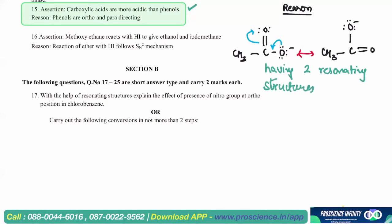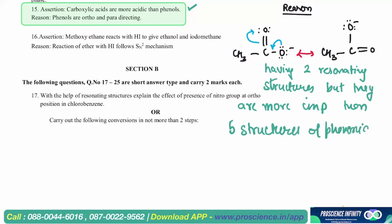But they are more important in explaining stability than five structures of phenoxide because in this case the negative charge is delocalized over two more electronegative oxygen atoms.